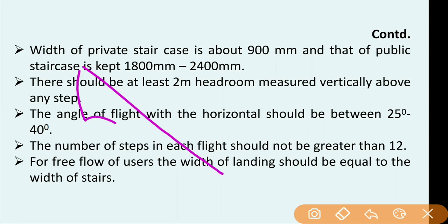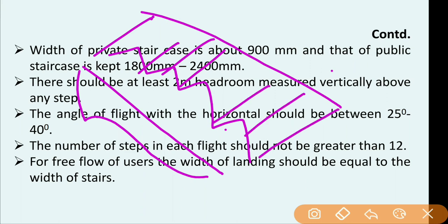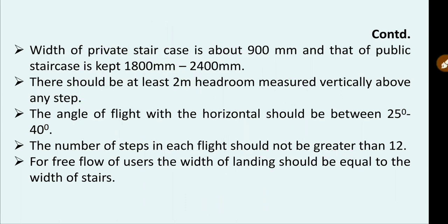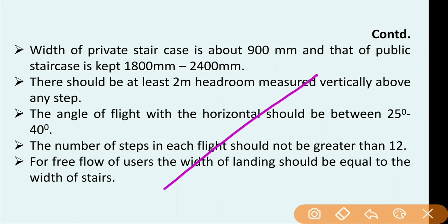The steps are over the flight, and the width of the stairs should be between 1800 to 2400 mm for public buildings and within one meter for private stairs. There should be at least two meters of headroom measured vertically above any step — the headroom is the clear space available above the steps or landing. The angle of flight with the horizontal should be between 25 degrees to 40 degrees, where theta is the angle of the flight.